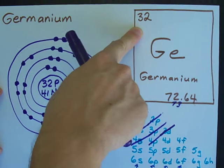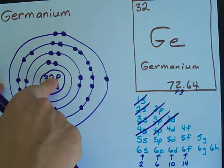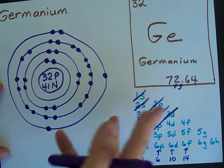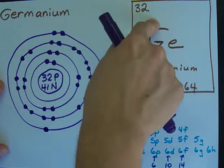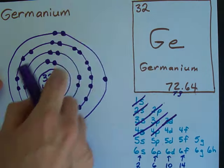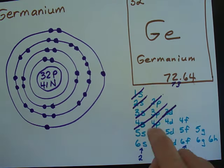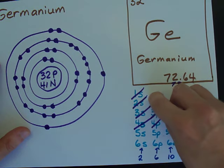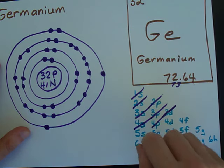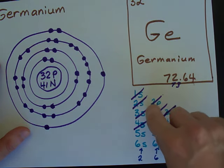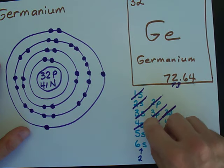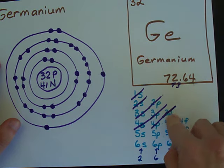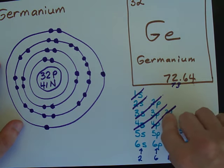Alright. 32 electrons, 32 protons, and 41 neutrons. The trick with elements that have an atomic number greater than 20 is that you have to follow this order of filling. And put 2 in the first, 2 in the second, 6 more in the second, 2 in the third, 6 more in the third, 2 in the fourth, and then come back down to the third shell and put 10 in there.